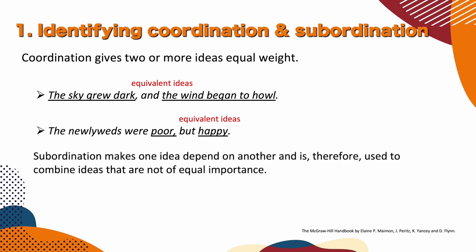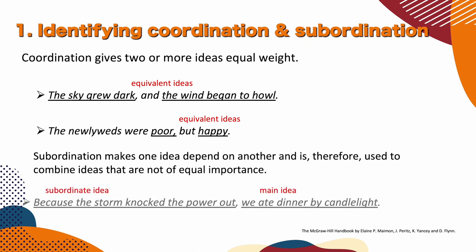Subordination makes one idea depend on another and is therefore used to combine ideas that are not of equal importance. We have subordinating conjunctions like BECAUSE. So we have a subordinate idea: 'Because the storm knocked the power out,' — don't forget the comma — and the main idea: 'we ate dinner by candlelight.' A subordinate idea is a dependent clause, not an independent one.